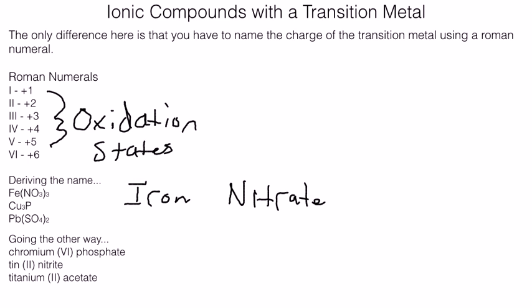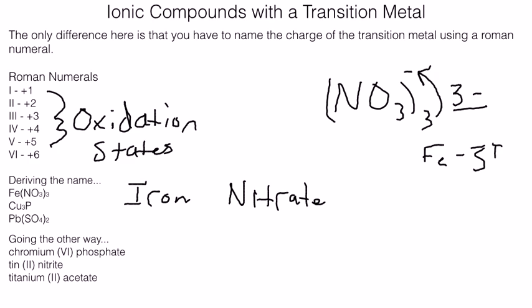But pay attention to outside the parentheses. When we have NO3 three, we know that NO3 is carrying a negative charge, but we have three molecules of it. So that makes our total three minus. And so we know that these compounds have to neutralize each other. So if nitrate is at a three minus charge, that means iron should be at a three plus charge.